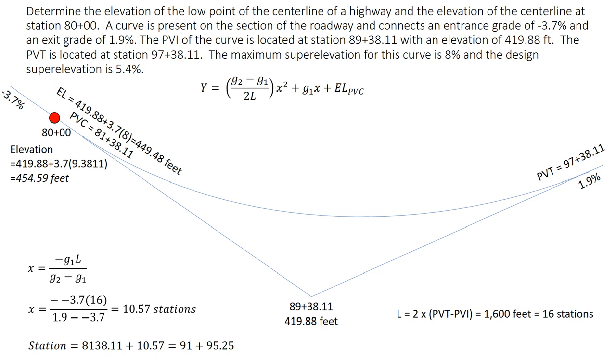B is g1 and c is the elevation of the PVC. And we already calculated that elevation of the PVC because we know that's important when we're dealing with vertical curves.